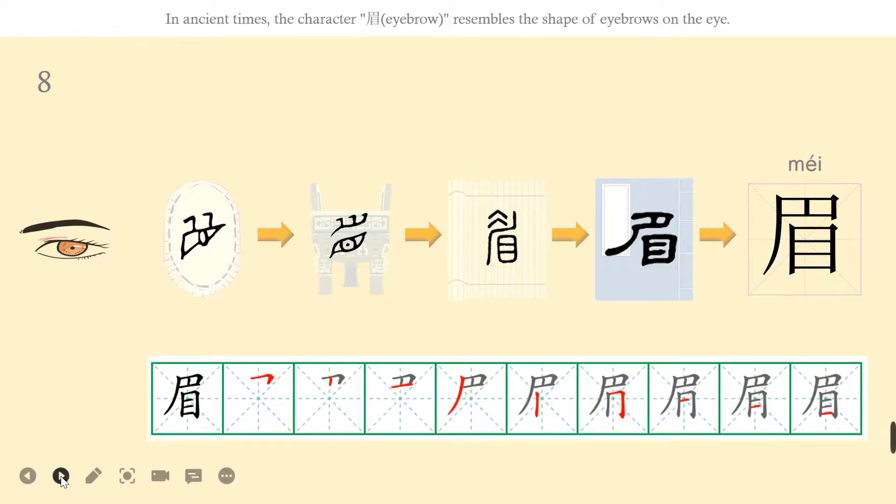Let's learn how to write méi. Méi has nine strokes. The first stroke: hénggōu. The second stroke: shù. The third stroke: héng. The fourth stroke: piě. The fifth stroke: shù. The sixth stroke: héngzhé. The seventh: héng. The eighth: héng. And the last stroke is héng.